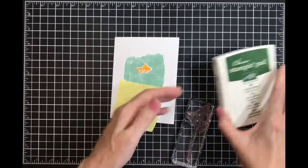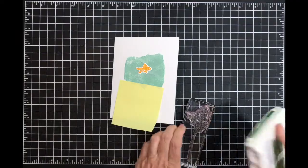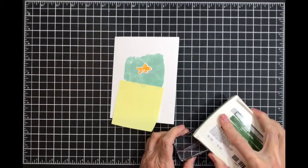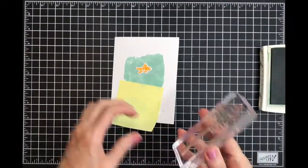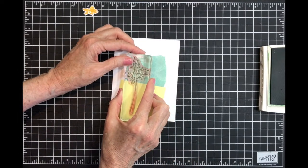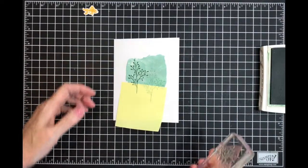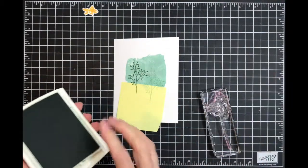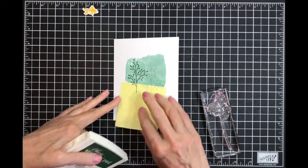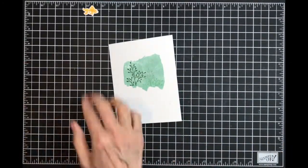I'm going to ink up my seaweed and stamp it here, and I'll stamp it again down there so it's back in the distance. Then I can take that off and it didn't go below my water.